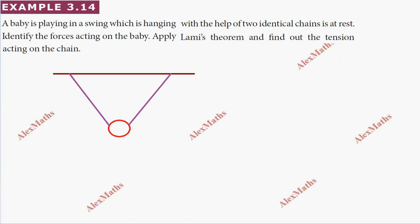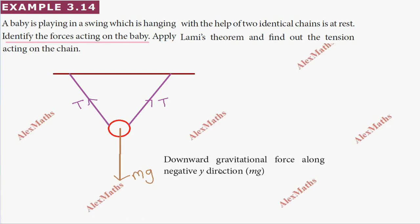The baby has a weight acting on the body downward, towards the gravitational pull. So the baby has a mass M, the gravitational force MG acts downward, and the tension T acts in the string. The downward gravitational force acts along the negative y direction, MG in the downward direction.